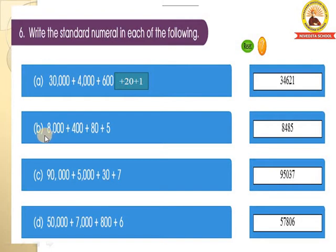Next, B: 8,000 plus 400 plus 80 plus 5. So how do we write? 8,485.